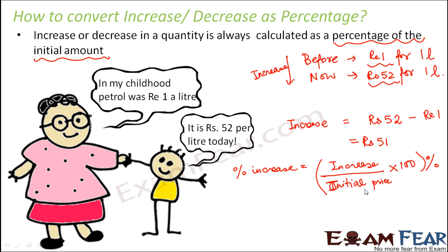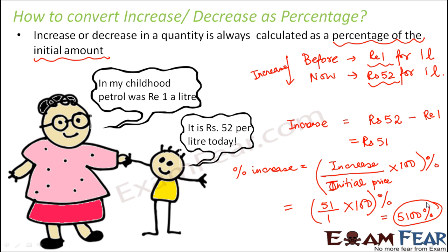Why divide by the initial price? Because percentage of increase or decrease is always calculated out of the initial amount, since whatever increase or decrease has happened, it has happened on the initial amount — which was rupee 1. So this would be equal to 51 divided by 1 into 100, which equals 5100%. This tells us that over these many years, the price of petrol has actually increased by 5100% — that's a huge increase. This is how we convert increase or decrease in terms of percentage.